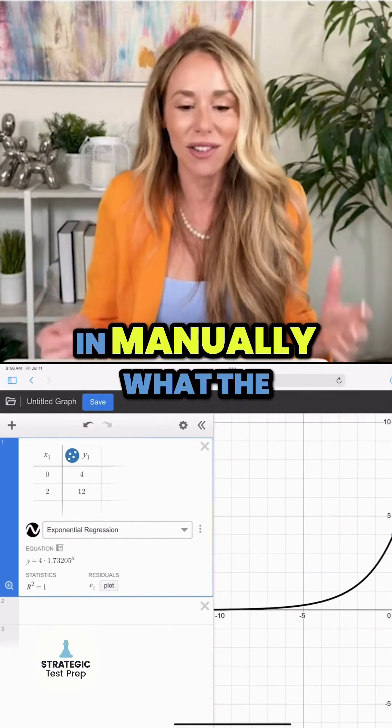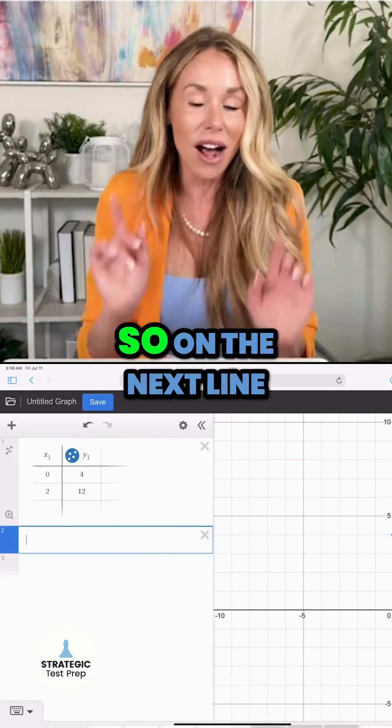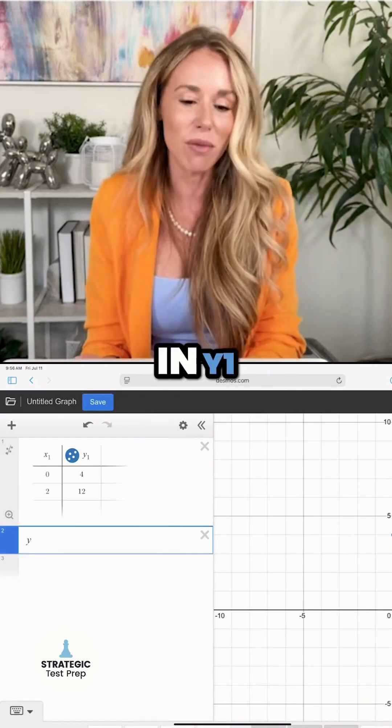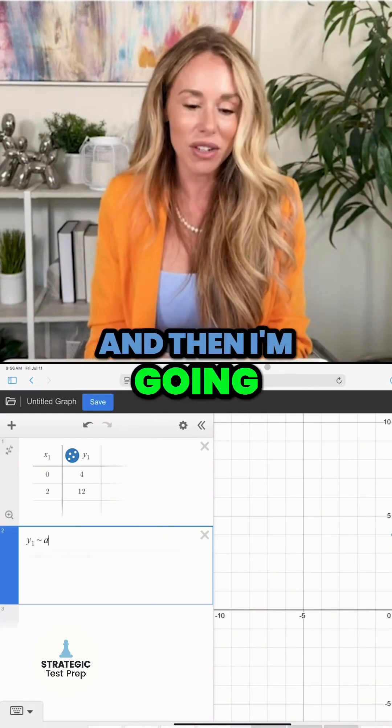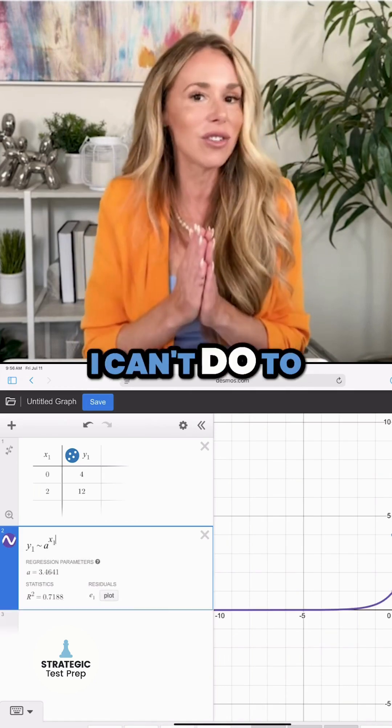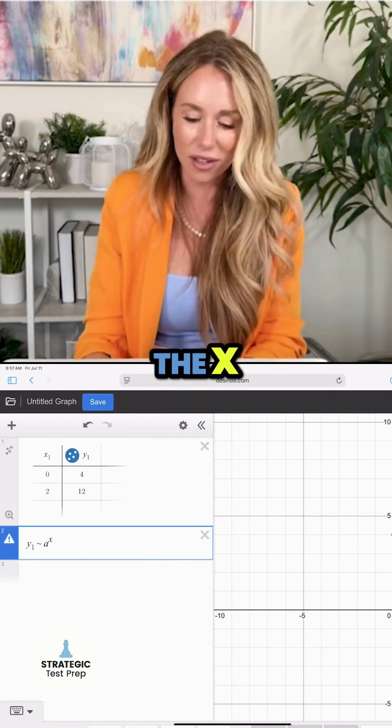So on the next line, because it's a regression, I'm going to type in y1 tilde and then I'm going to do a to the x1 power. Right, I can't do to the x - look at what happens if I do to the x. You get an error.